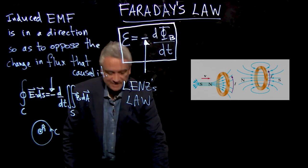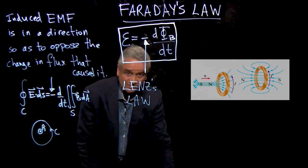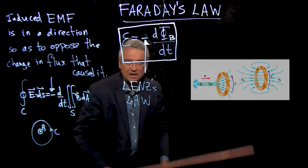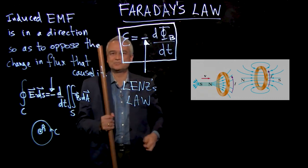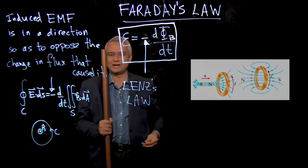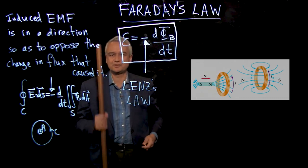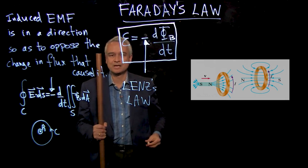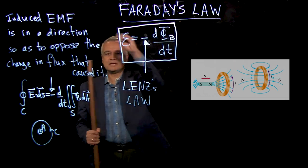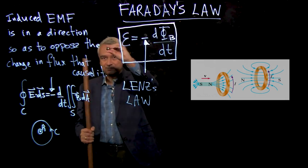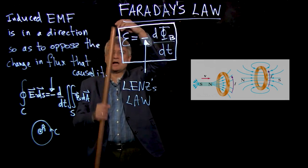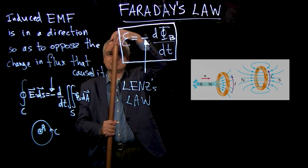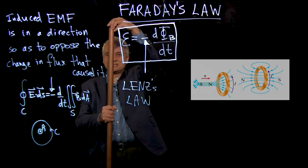So this is responsible for what we saw in this demonstration, which I did previously for you in the lecture theater. And now I'm just going to redo it here. When I take this magnet and I drop it through this copper pipe, it goes very, very slowly.